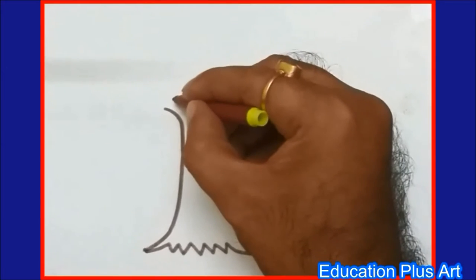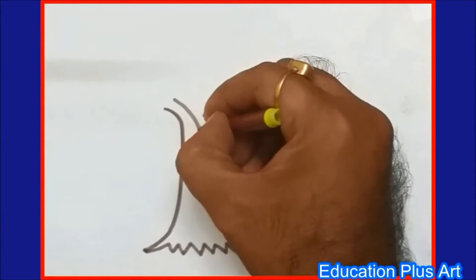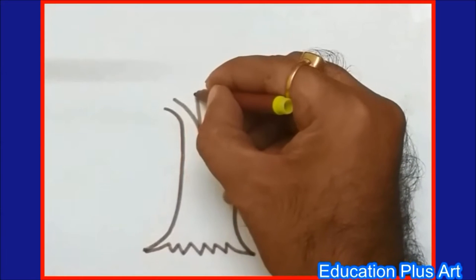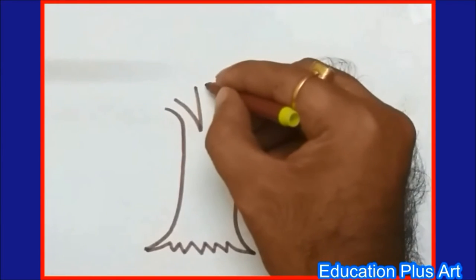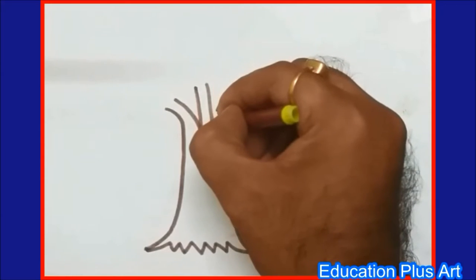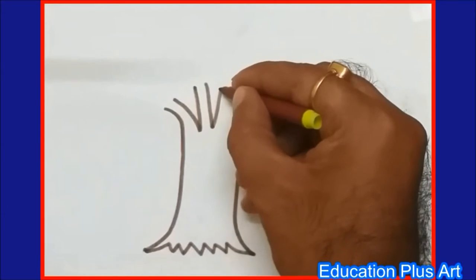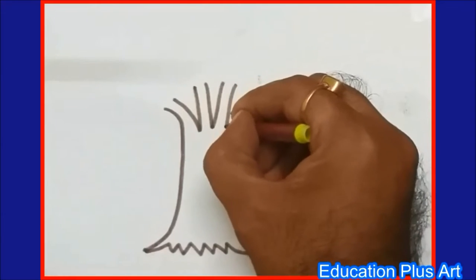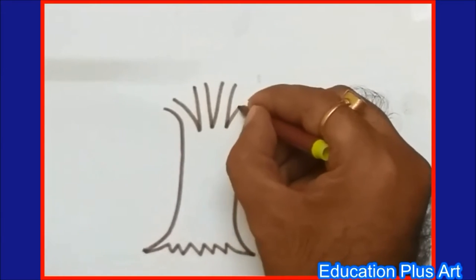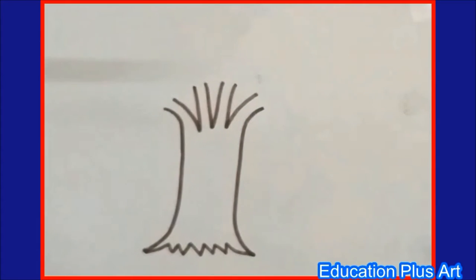One curve going downside, one slanting line going upside, again one slanting line going downside and upside, one more slanting line going towards downside and one curve going upside. These are the spreading branches.